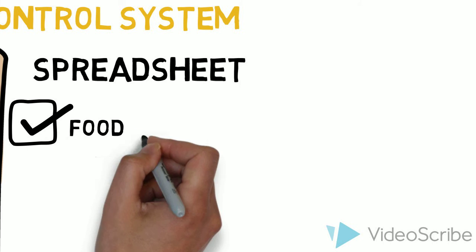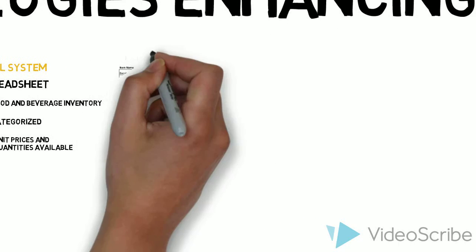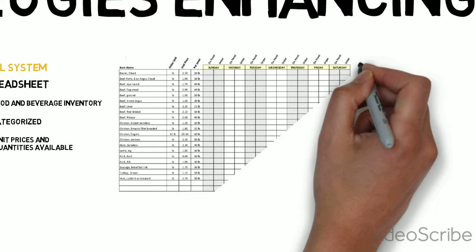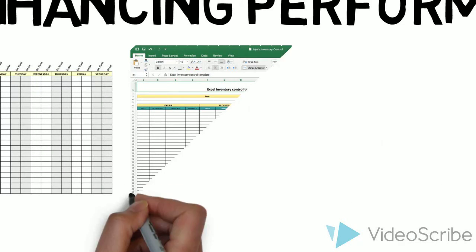Specifically, we recommend using spreadsheets to track and input all food and beverage inventory items in a properly categorized manner, with unit prices and quantities available. Examples of this can be categorized according to the day of the week, or categorized based on sales.